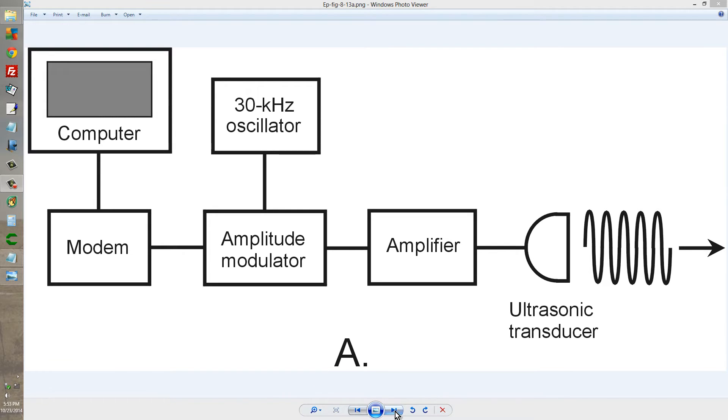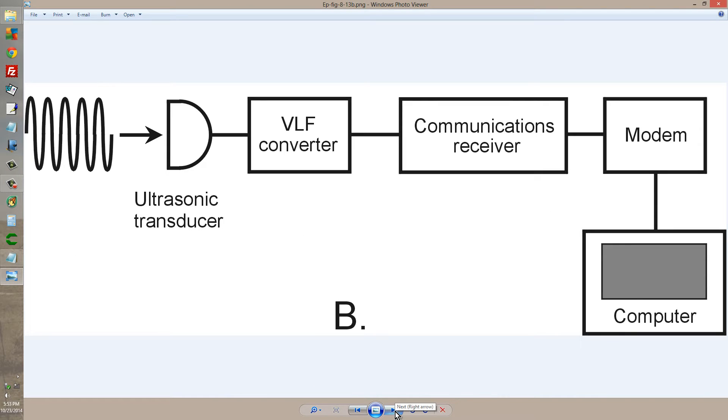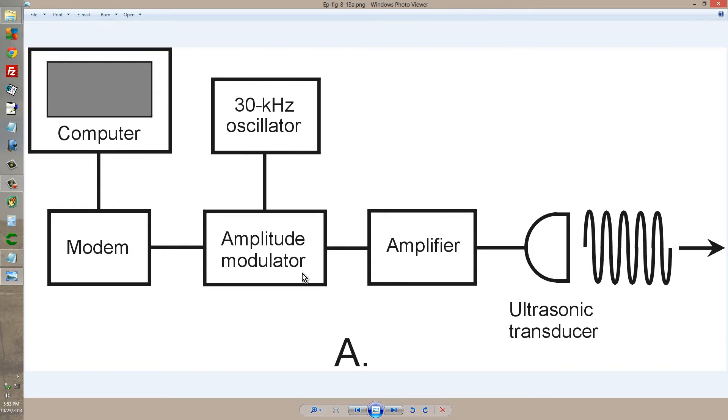At A, we have the transmitter. At B, we have the receiver. These are just block diagrams, and I'll describe how they work now.